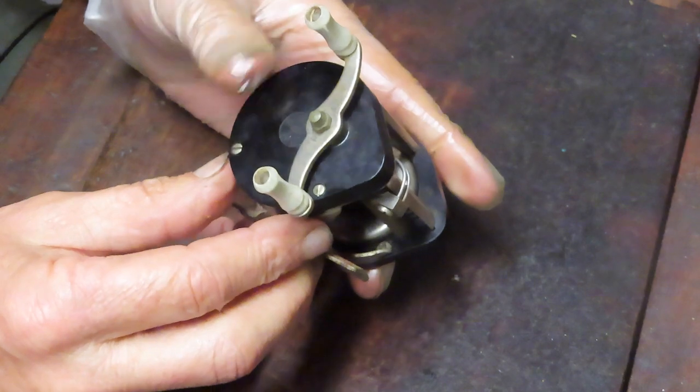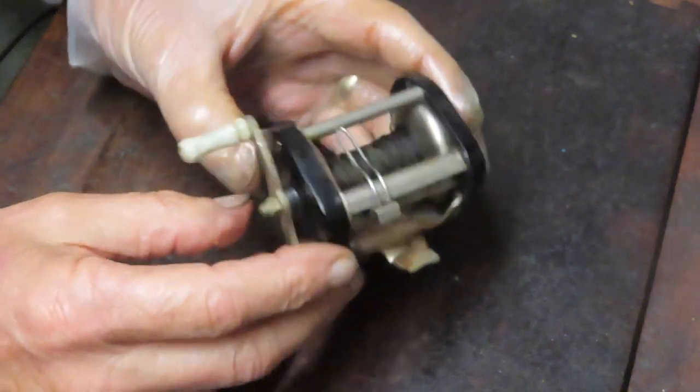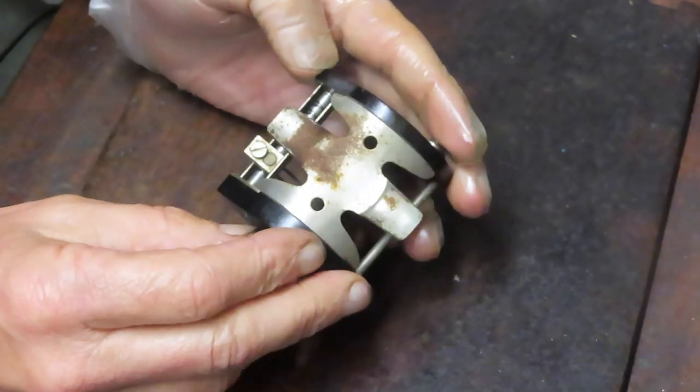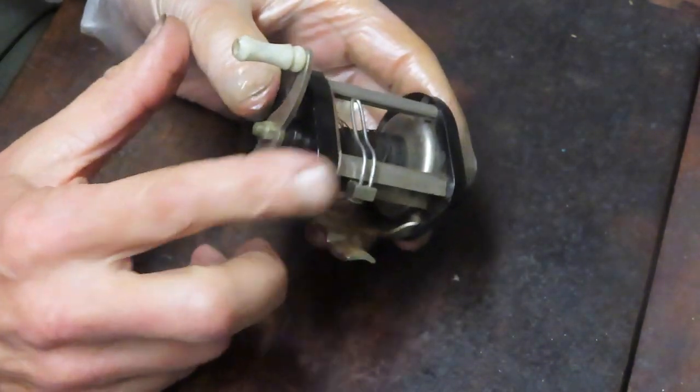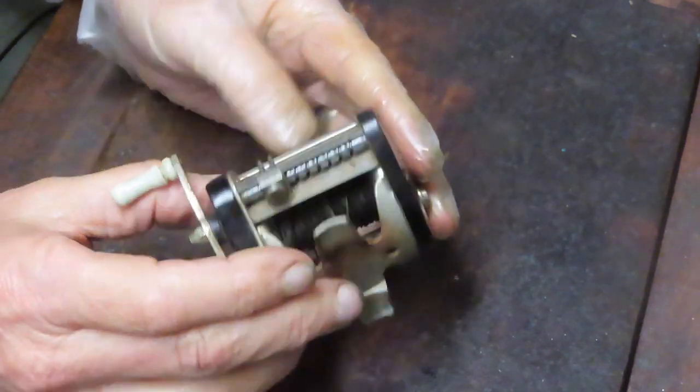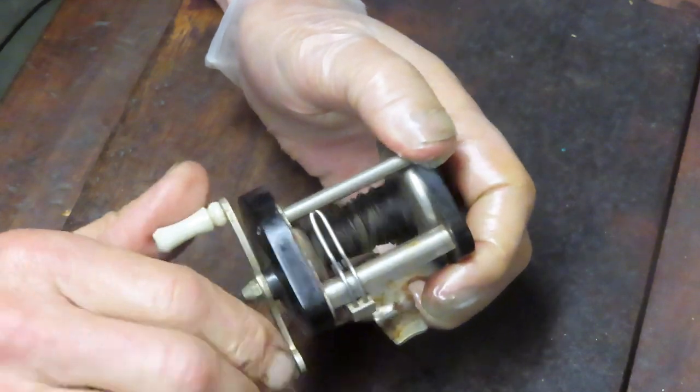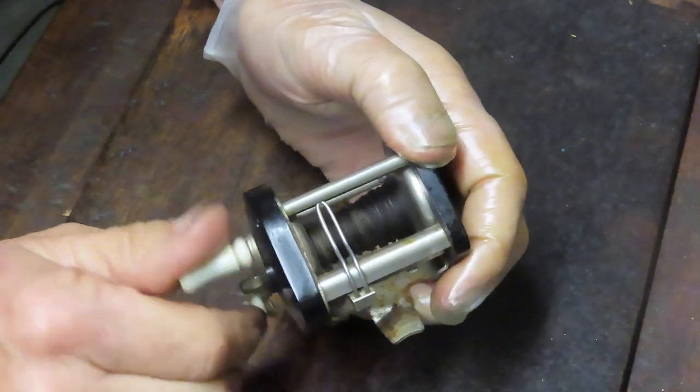And interestingly enough, one of the catalogs that I was looking through, as I was doing a little bit of research on the history of the Ocean City Fishing Reel Company, showed that this reel was selling for 61 cents. Well, that's probably an indication of how economics have changed over time.